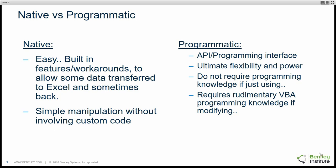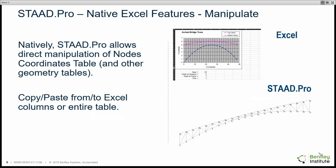I'm going to cover STAAD Pro native features first. Natively, STAAD Pro has tables — you model your structure and on the right you have node coordinates tables, beam tables, etc. STAAD Pro allows direct manipulation of the node coordinates table and other geometry tables. For example, to create a curved truss, the curve is driven by certain formulas in Excel, and you can copy and paste to and from Excel columns or even entire tables.